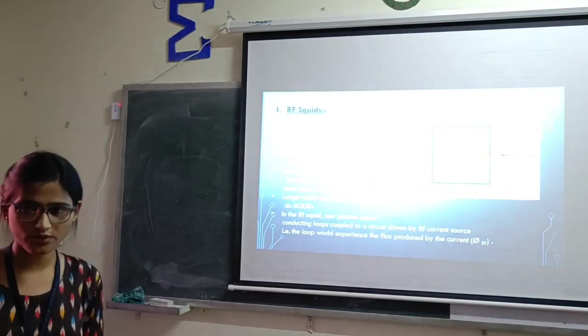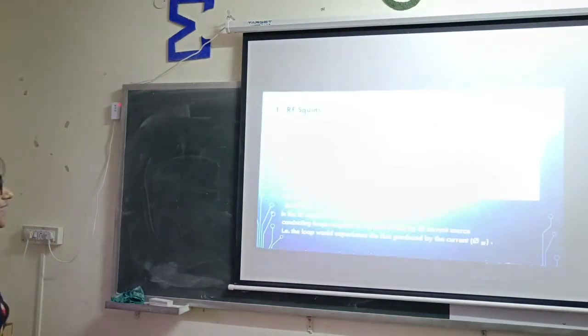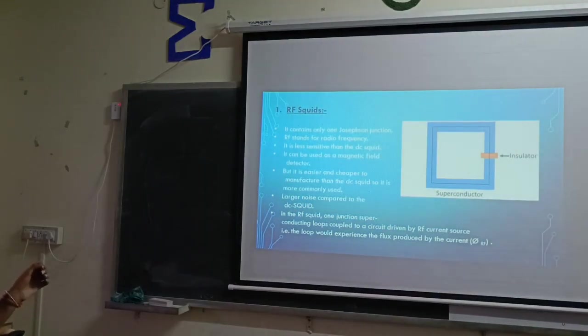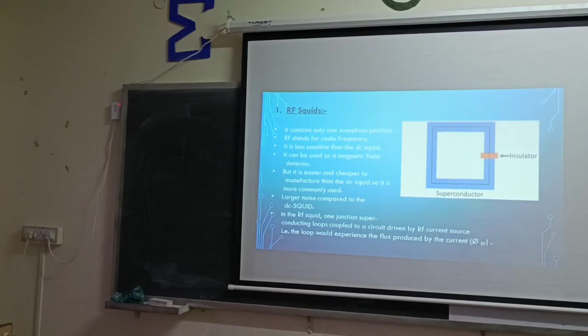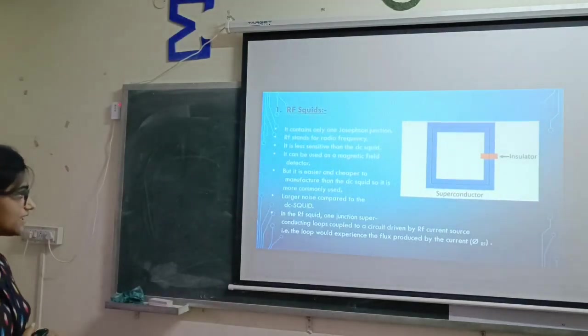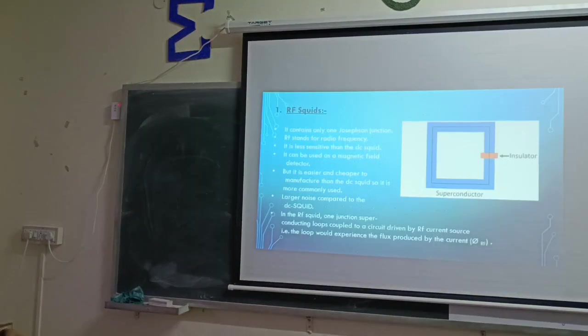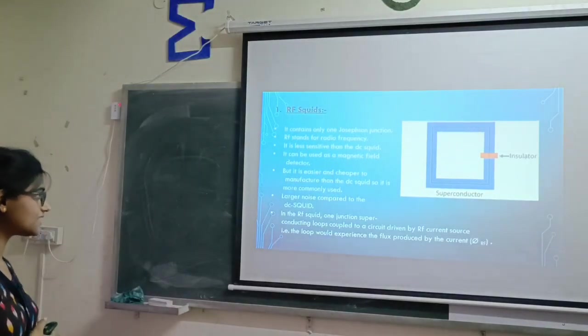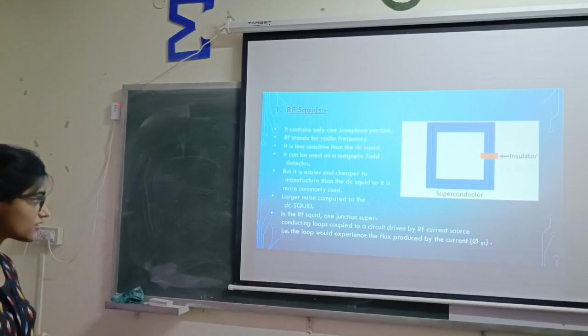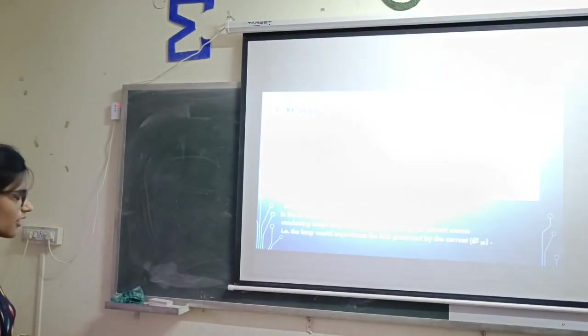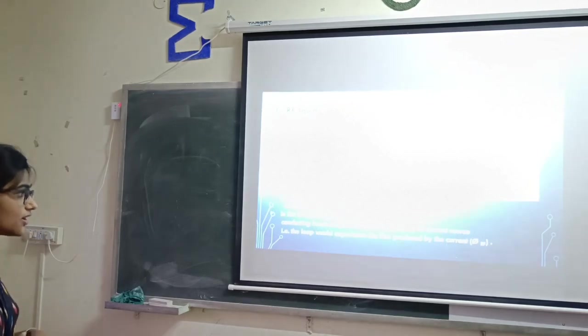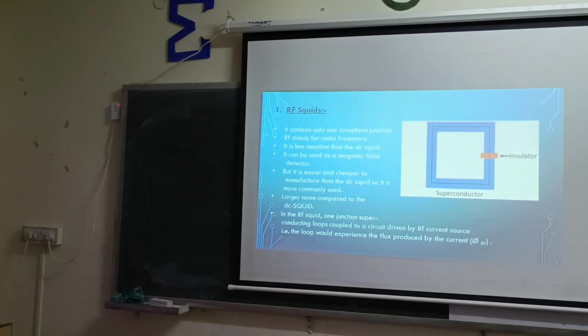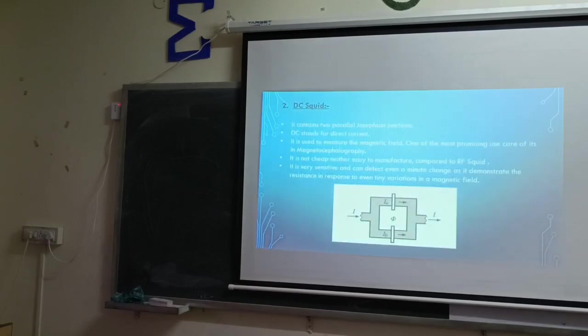SQUID is of two types: AC squid and DC squid. AC or RF squid contains only one junction. It operates at radio frequency. It is less sensitive than DC squid. It can be used as a magnetic field detector, but it is easier and cheaper to manufacture than DC squid. Here larger noise compared to DC squid. In RF squid, one junction superconducting loop is coupled to a circuit driven by RF current source. That is, the loop would experience the flux produced by the current in the coil.